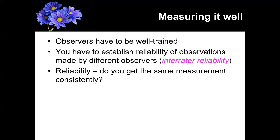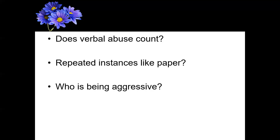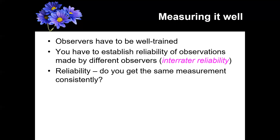So how do we get around these issues? We want to have clearly defined behavior. Rather than just saying 'aggression' — which is too open to interpretation — you'd want to specify something like 'the number of physical altercations.' You can build on that further, but the key is being precise. Another thing is that your observers have to be well trained.